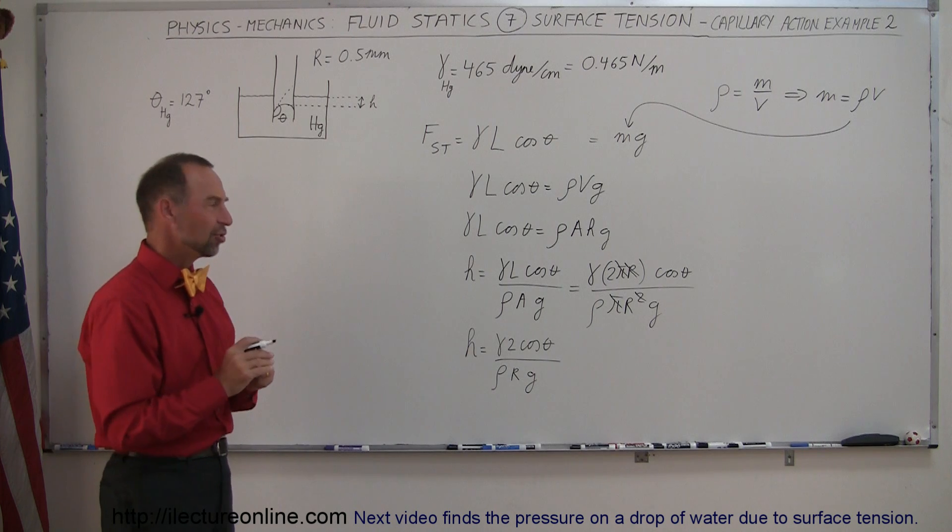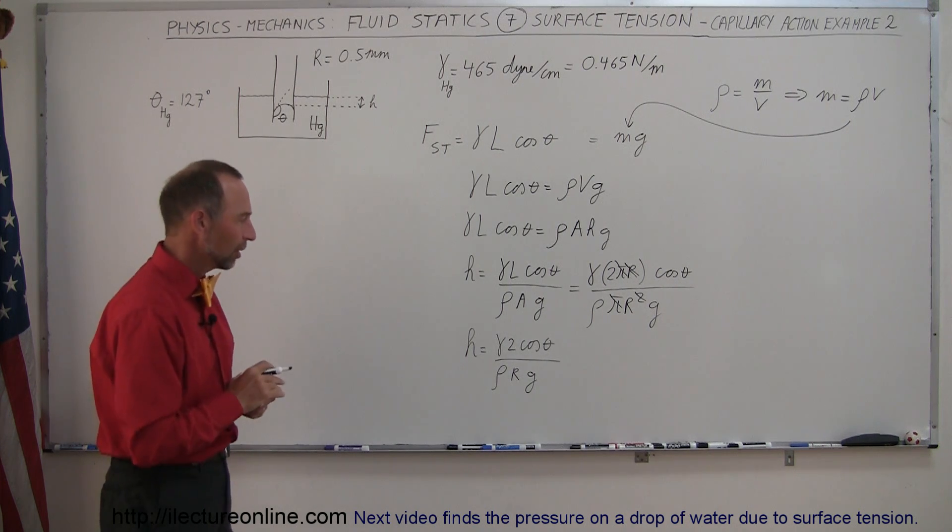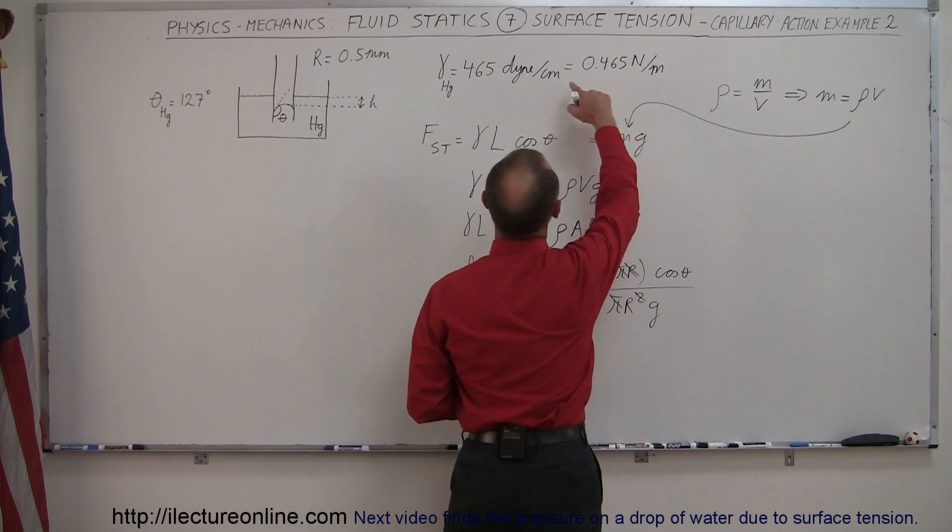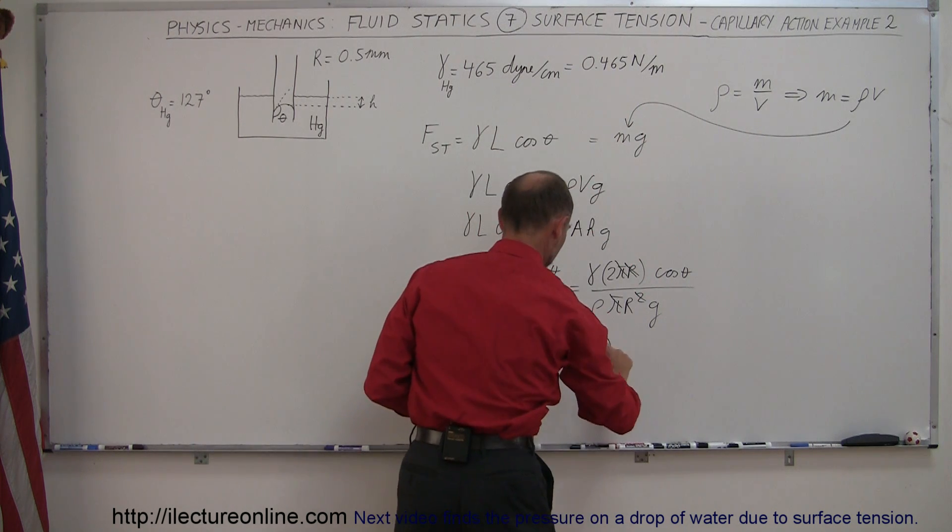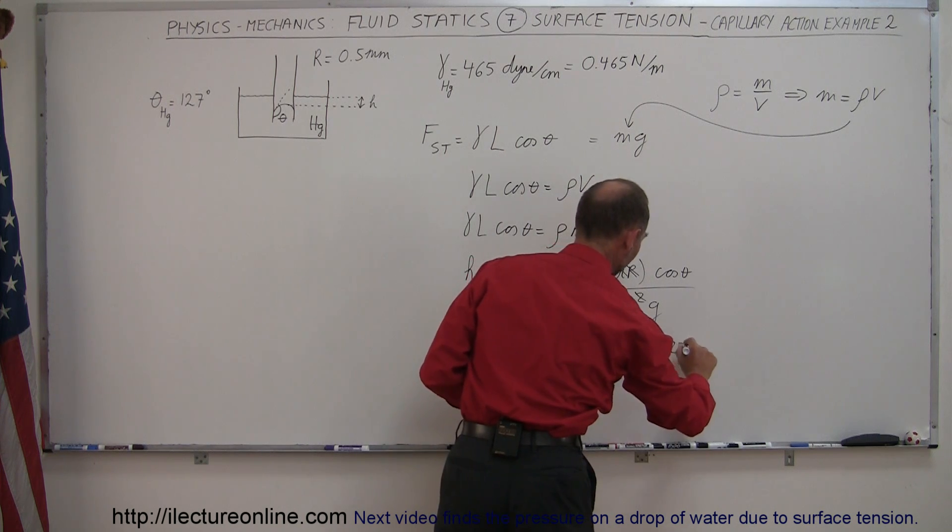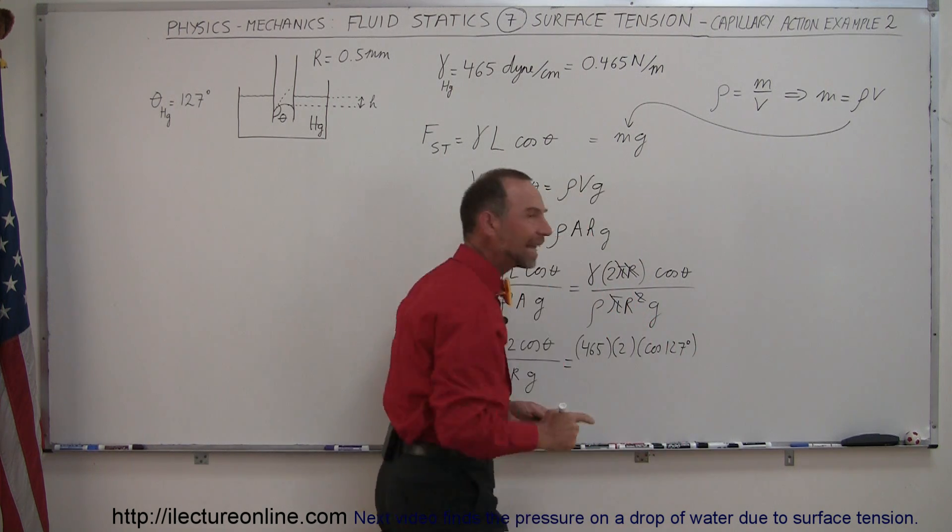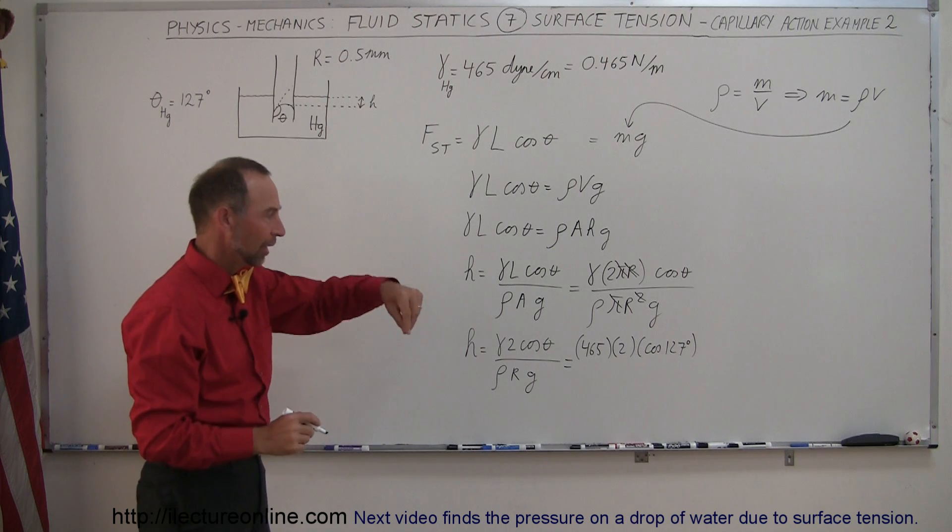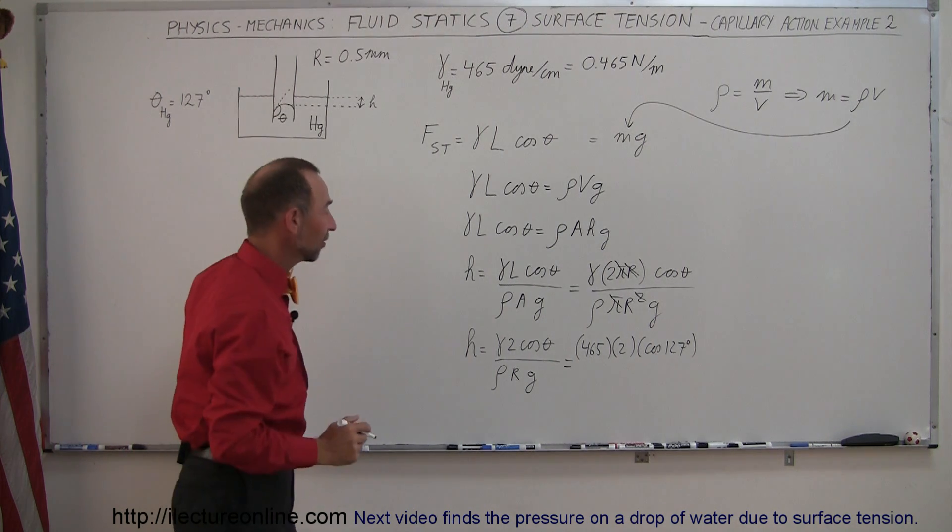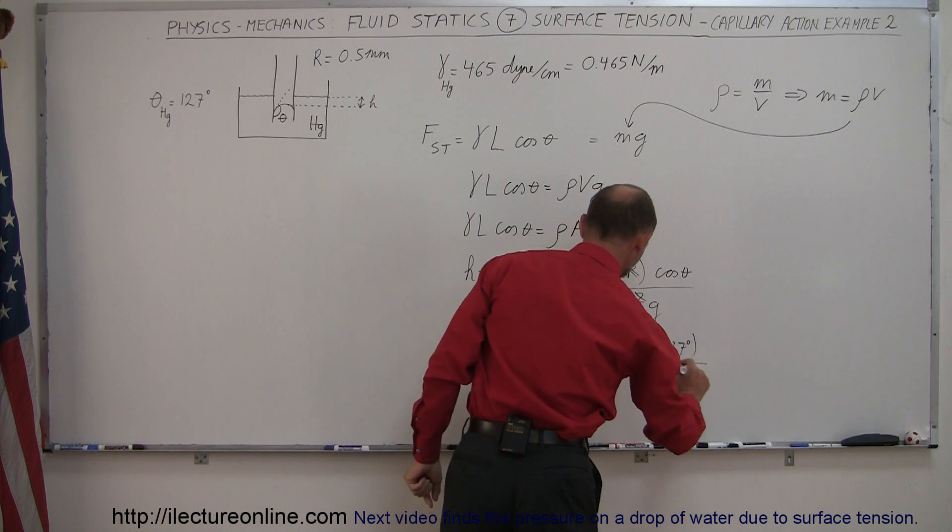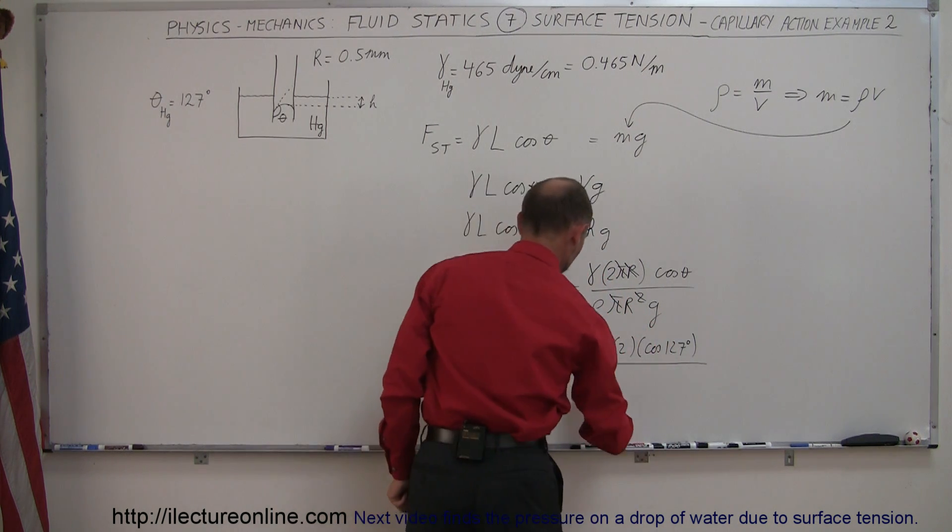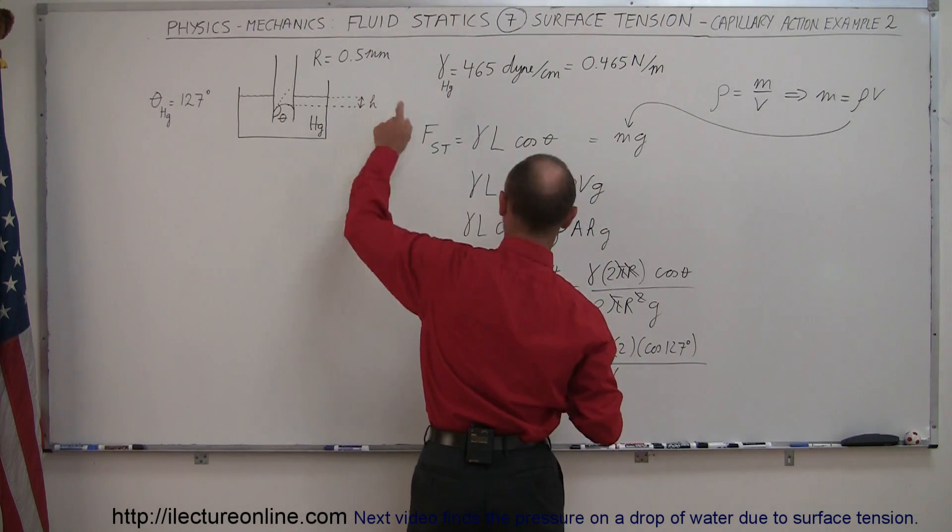We probably want to do it in CGS units, centimeters and gram seconds. So this is equal to gamma would therefore be 465 times 2 times the cosine of 127 degrees. That will give us the negative. The negative will then indicate that it's downward. So we have a depression that arises inside the tube, divided by the density. This is 13.6 grams per cubic centimeter. We multiply times the radius, which was a half a millimeter.